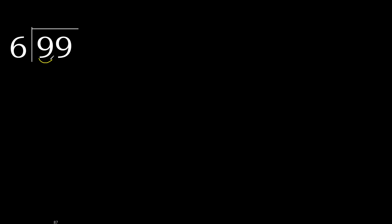99 divided by 6. Starting with 9 — 9 is not less, so we work with 9. 6 multiplied by which number is nearest to 9 but not greater? 6 multiplied by 2 is 12, which is greater. 6 multiplied by 1 is 6, which is not greater. 9 minus 6 is 3.